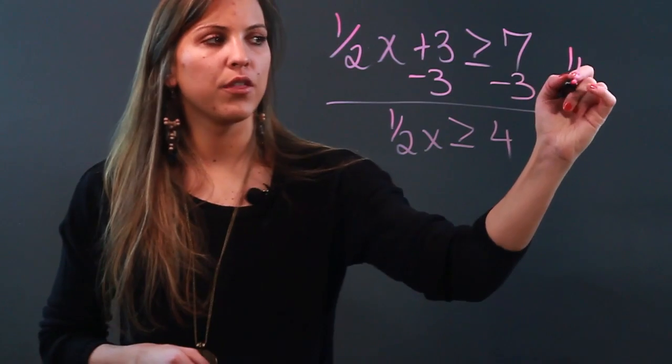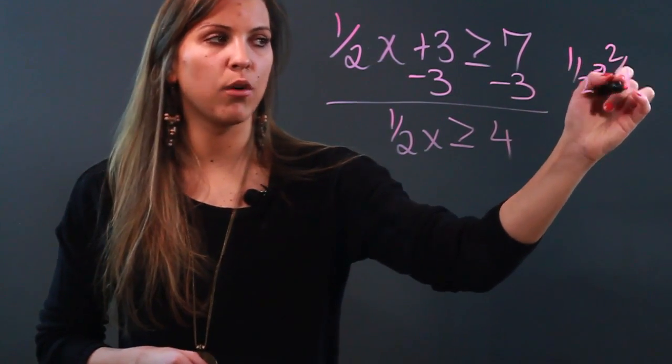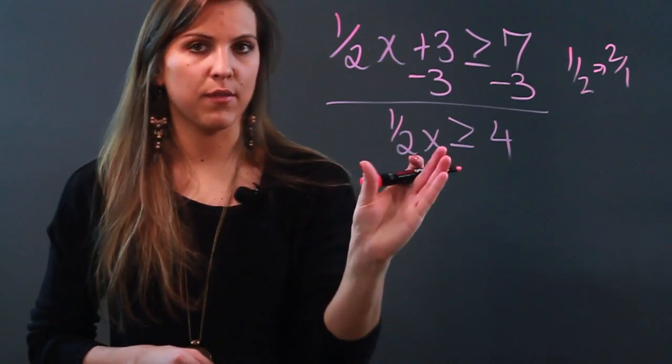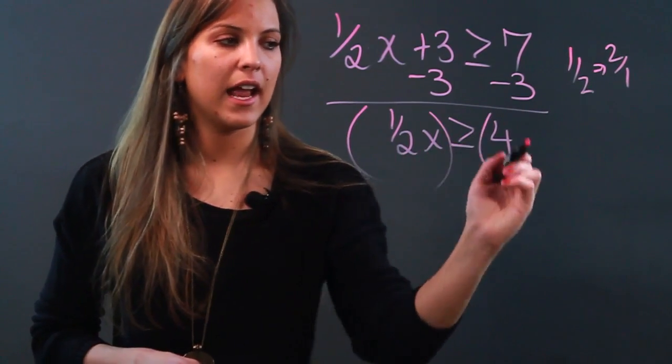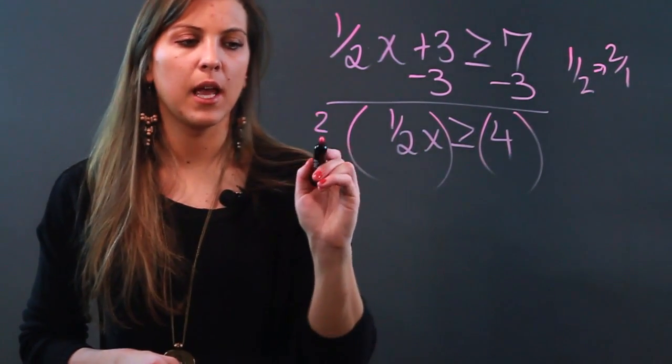So the reciprocal of 1/2 is 2 over 1. To get rid of the fraction, you multiply by its reciprocal. I'm going to take this whole side and this whole side and multiply by 2 over 1.